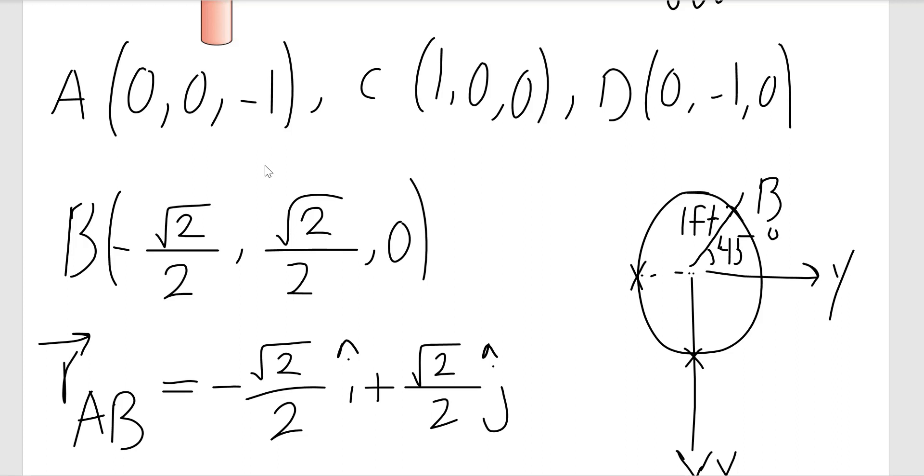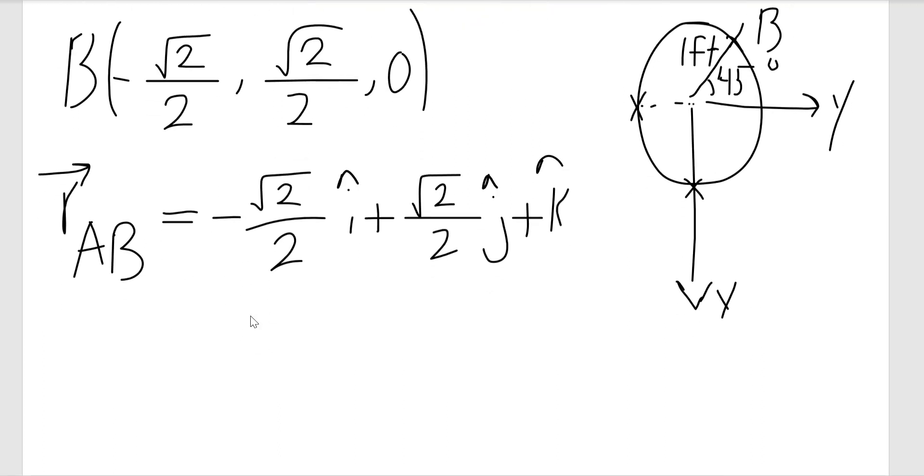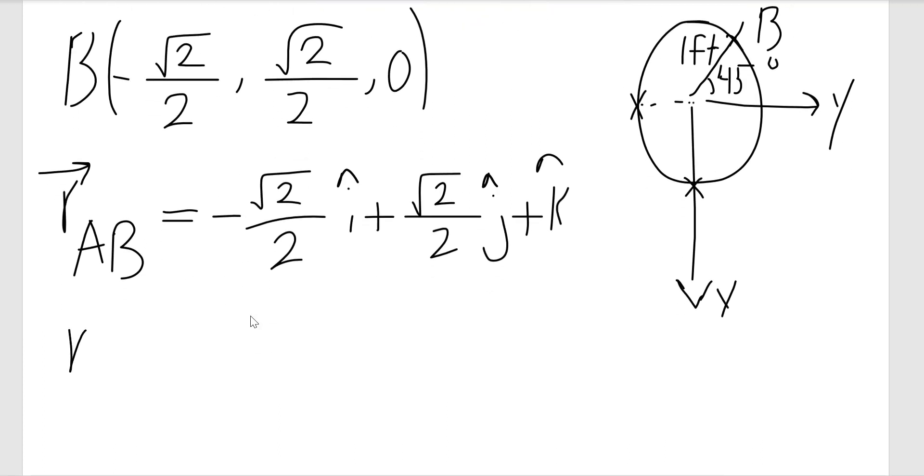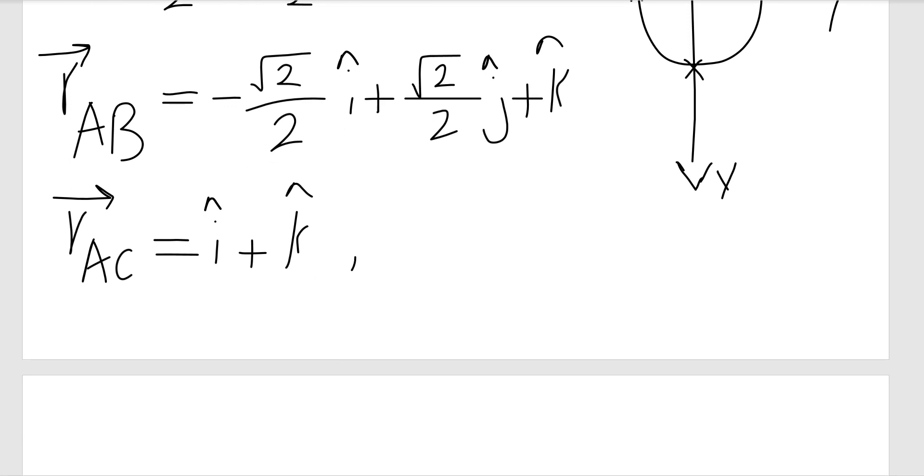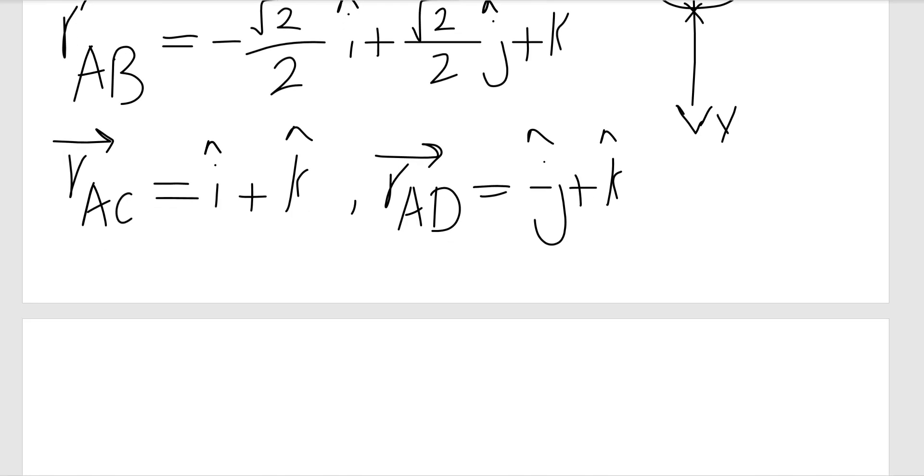Let's write rAC first. Same thing here: the coordinate of C minus the coordinate of A, or how much are we moving from point A to point C. That would be i plus k. And rAD would be negative j plus k. Now I have the position vectors, I can easily find the unit vectors.